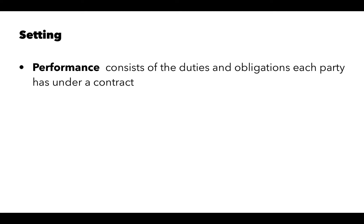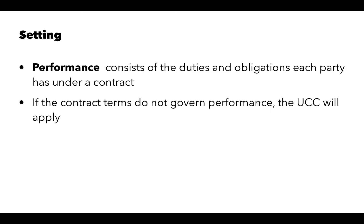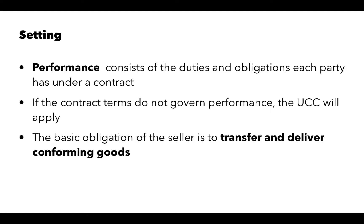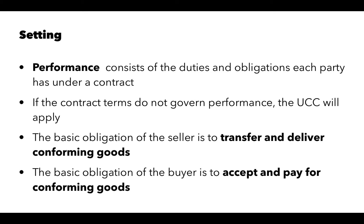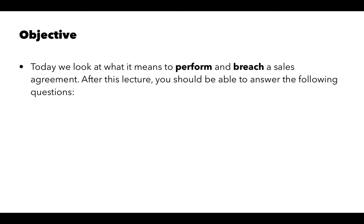When we talk about performance, we're talking about the duties and obligations that each party has under a contract. If the contract doesn't specify performance terms — meaning doesn't outline the duties and obligations of each party — then the UCC provides those duties and obligations. The basic obligation of the seller in any sales contract is to transfer and deliver conforming goods. And the basic obligation of the buyer is to accept and pay for the conforming goods.